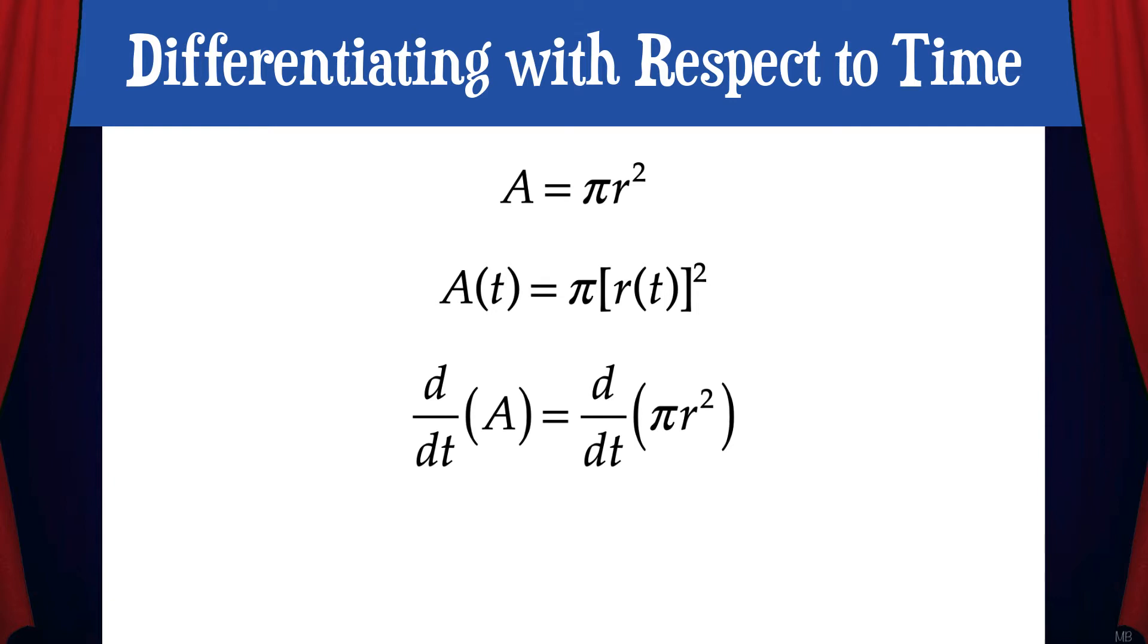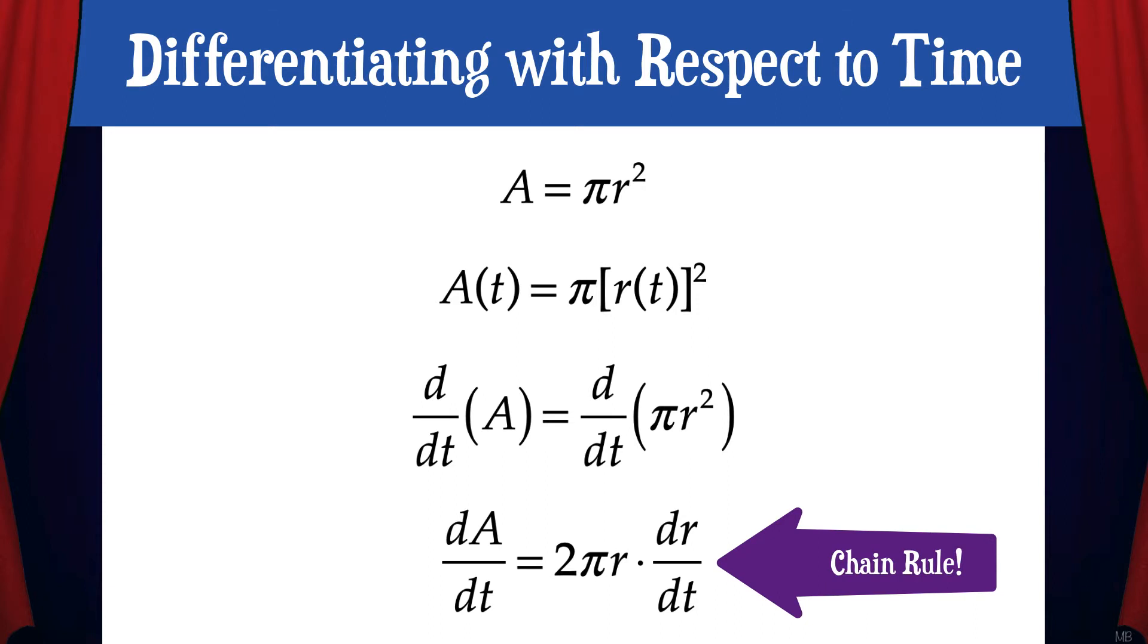Taking the derivative of the left side gives us dA/dt. Taking the derivative of the right gives us 2πr times dr/dt because of the chain rule. We'll be using this technique of differentiating with respect to time in all of our related rates example problems.